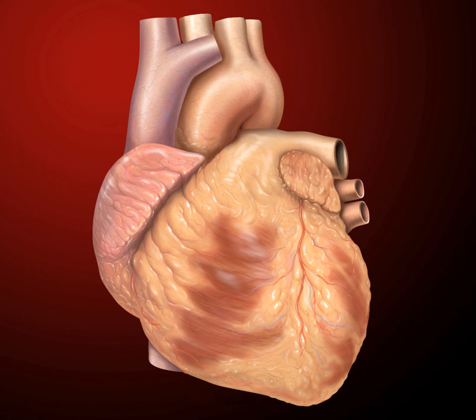The cardiac skeleton also provides an important boundary in the heart's electrical conduction system since collagen cannot conduct electricity. The interatrial septum separates the atria and the interventricular septum separates the ventricles. The interventricular septum is much thicker than the interatrial septum, since the ventricles need to generate greater pressure when they contract.